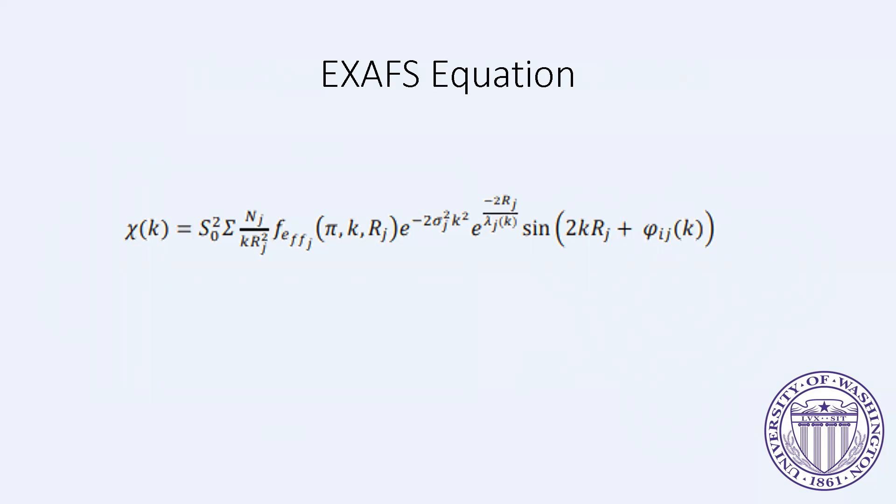N sub j is the number of atoms in the j-th shell. R sub j is the distance between the absorbing atoms and atoms in the j-th shell. Fj is an ab initio amplitude function for j, and the exponential is a Debye-Waller factor for the shell. It accounts for damping due to thermal and static disorder in the shell.